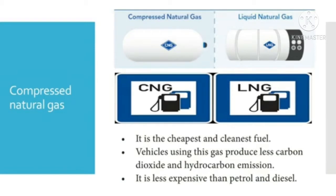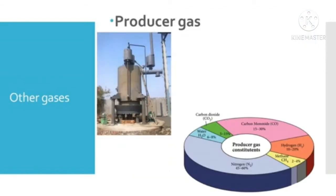Compressed natural gas has the following properties: it is the cheapest and cleanest fuel; vehicles using this gas produce less carbon dioxide and hydrocarbon emissions; it is less expensive than petrol and diesel. The average composition of compressed natural gas is: methane 88.5%, ethane 5.5%, propane 3.7%, butane 1.8%, and pentane 0.5%.